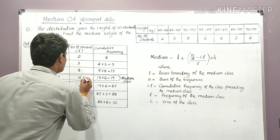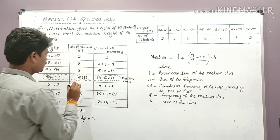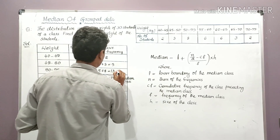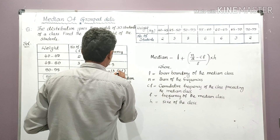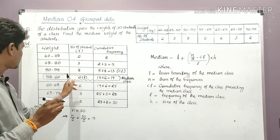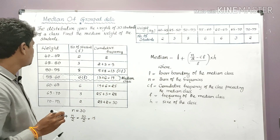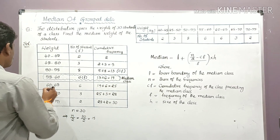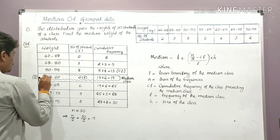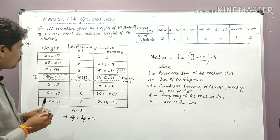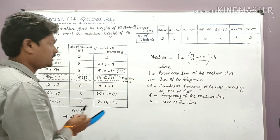After identifying the median class (55–60): the frequency of the median class is F. The cumulative frequency of the class preceding the median class is cf. The lower boundary of the median class is L = 55. Now we substitute all values into the formula.